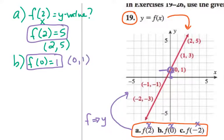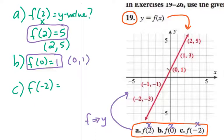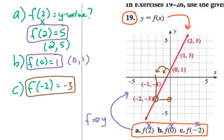Try the last one on your own: what is f of negative 2? When I look at the graph, I go to negative 2 on the x-axis. The graph is actually below it, so I go down from the graph and look over at the y-axis. That y value is negative 3. So when x is negative 2, y is negative 3. Sometimes this is a little bit easier than the algebra, but get comfortable doing it either way — looking at a graph or doing it algebraically by hand.